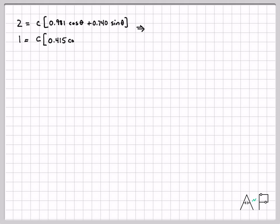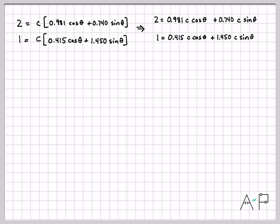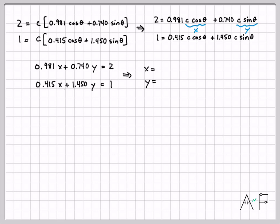Copying the simplified equations forward and distributing C to eliminate parentheses gives a new set of equations. Here's the key trick: theta is still inside the cosine and sine, not isolated as a linear coefficient. So we define X = C·cos(θ) and Y = C·sin(θ). With those substitutions, the system becomes a nice linear constant-coefficient system of equations — it looks like normal algebra now.